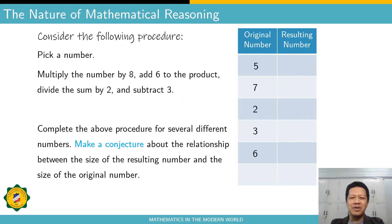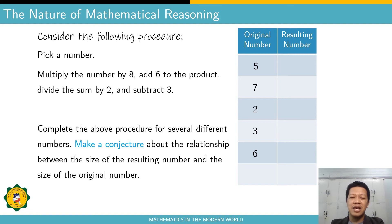Let us do this activity. I hope you have a piece of paper and a calculator. Consider the following procedures: pick a number, multiply the number by eight, add six to the product, divide the sum by two, and subtract three. You may use the numbers in the table — five, seven, two, three, and six — and get the resulting number by following these steps. Make a conjecture about the relationship between the resulting number and the original number. You may pause this video and complete the table.